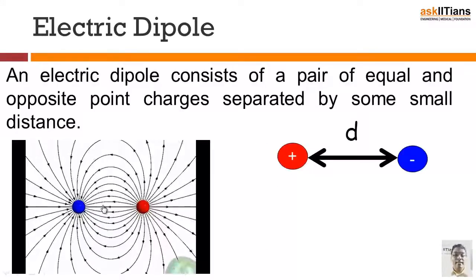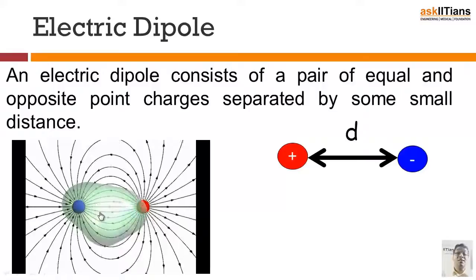An electric dipole consists of a pair of equal and opposite point charges separated by some small distance. When a molecule occupies both places it becomes stressed, which basically means that the center of positive charge is not equal to the center of the negative charge.